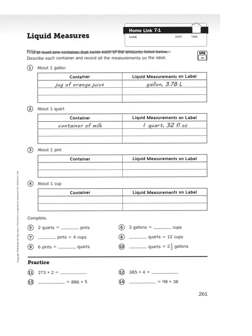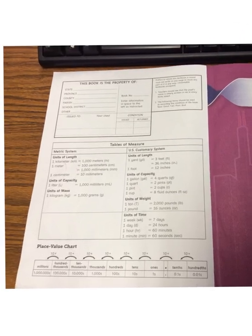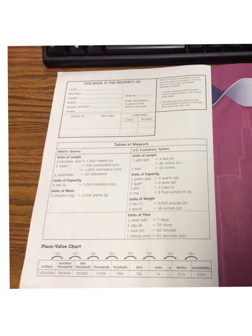Now you might be thinking, but Mr. Wasserman, I don't remember all those conversions. How do I do that? Well, if you are looking at Home Link 7.1, that means you are operating out of this everyday math curriculum, which means you have access to your student math journal. On the inside front cover of your student math journal, you have a table of measurements.